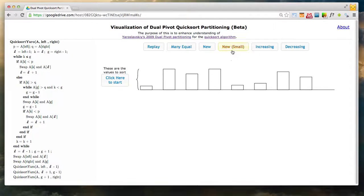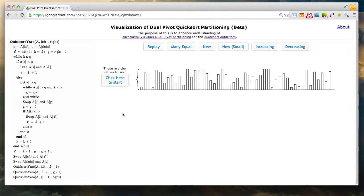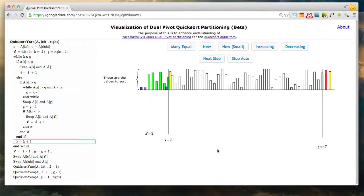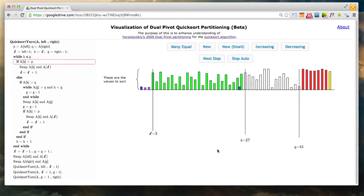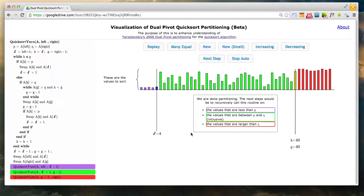First I'll show what it does. Let's do auto. This partitioning method breaks it up into three different sets: those less than the left pivot, those in between the left and right pivot, and those greater than the right pivot. You end up with three sets: purple less than the left pivot, green in between, and red above the right pivot.